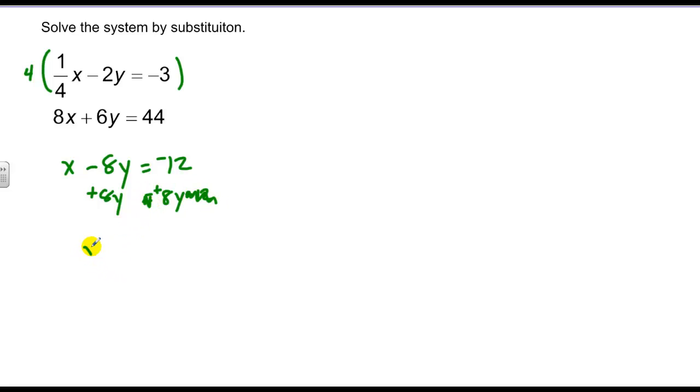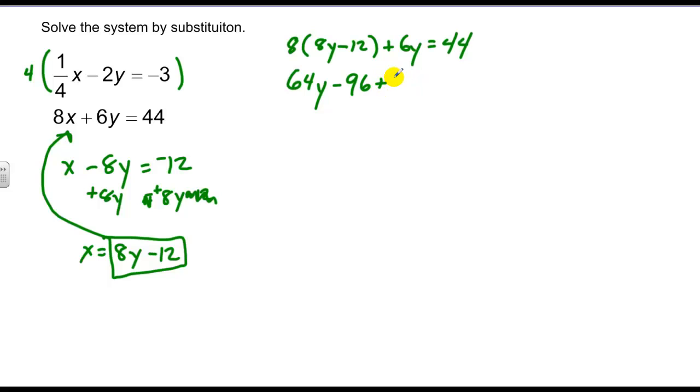I can then take that 8y minus 12 value and substitute it in for the x in the bottom equation. This gives me 8 times 8y minus 12 plus 6y is equal to 44. 64y minus 96 plus 6y is 44. This is 70y is equal to 140. Then I add 96 to both sides. Divide by 70 to both sides. Y is equal to 2.